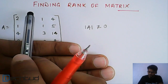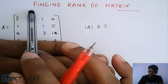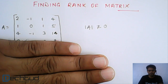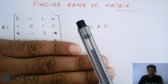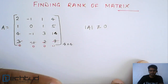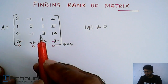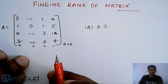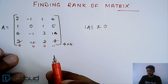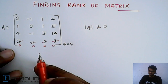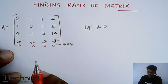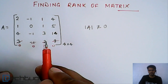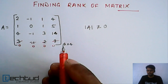You need to check only the remaining possible minors. In this manner you are basically decreasing the number of calculations. So what we will do is try to make as many zeros as possible in a single row.